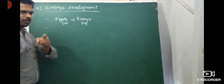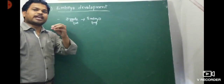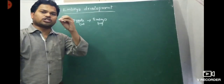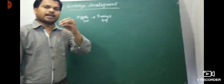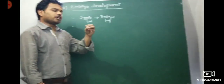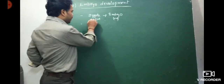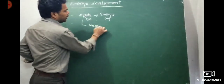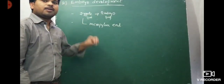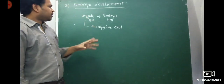I will show the diagram. The zygote is a single cell formed at the micropylar end, because fertilization also takes place at the micropylar end of the embryo sac. So zygote formation and development both take place at the micropylar end.